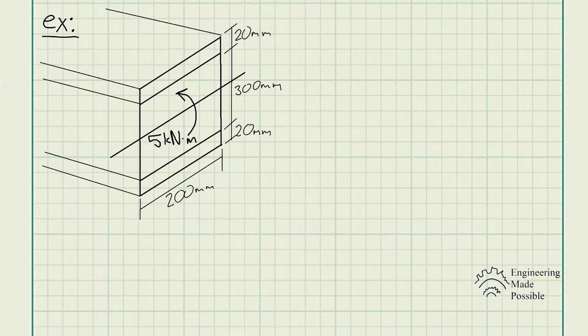For this problem statement, a wood beam is reinforced with steel straps at its top and bottom as shown. Determine the maximum bending stress developed in the wood and steel if the beam is subjected to a bending moment of 5 kNm. Take the modulus of elasticity of wood as 11 GPa and the modulus of elasticity of steel as 200 GPa.